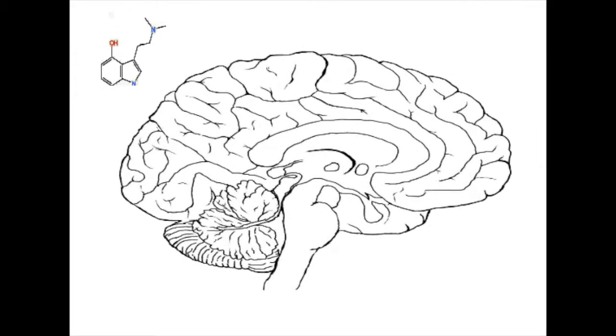In the brain, psilocin alters the default mode network, or DMN. This is composed of a cohort of smaller neuroconnections, including the medial prefrontal cortex, posterior cingulate cortex, anterior cingulate cortex, hypothalamus, amygdala, hippocampus, and thalamus.